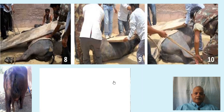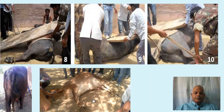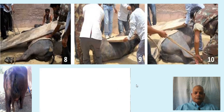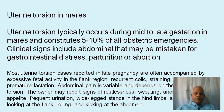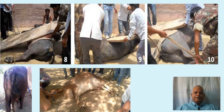The demonstration video is not playing, so it will be hosted separately to show exactly how the uterus is detorsed. Importantly, assessment of the side of the torsion is critical before attempting to roll the animal, because rolling on the wrong side would increase the torsion.